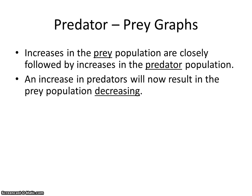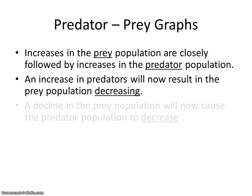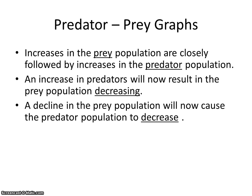Once you get that increase in predators, the prey population is going to decrease. The wolves are going to be eating all of those moose, and there's not going to be as many. So they're going to decrease. Then there's not going to be as much food for the wolves, and the wolves are going to decrease — the predator population is going to decline.